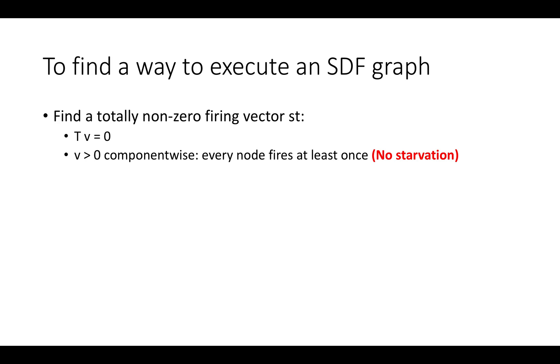So if we can find this vector of firings with these properties, we've basically found a sequence of firings where we know that we can repeat the process over and over again with no deadlock and no buffer overflow. And we know that if we can find this sequence of firings, that we're also going to have no starvation in the sequence because everything that needs to happen is going to happen at least once in every execution of it.